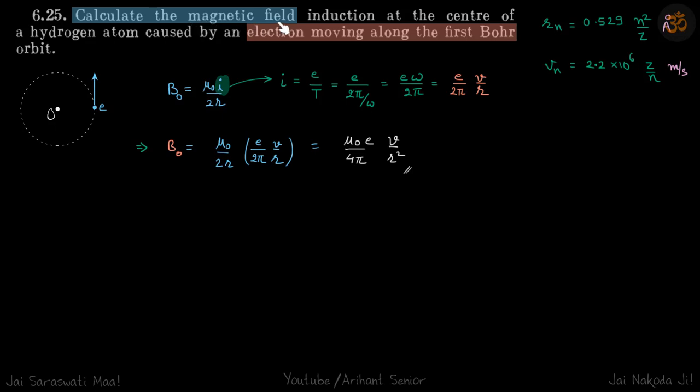We need to calculate the magnetic field at the center of this hydrogen atom because of this rotating electron, which is moving in the first Bohr orbit.